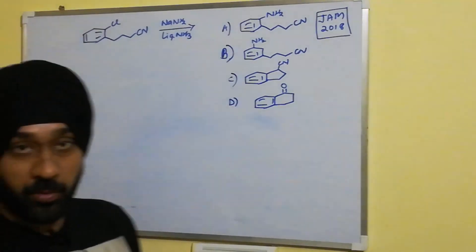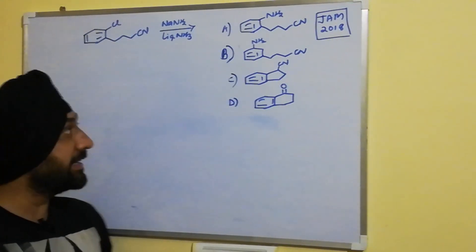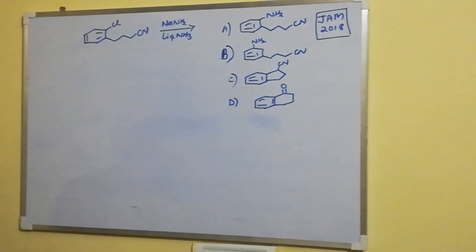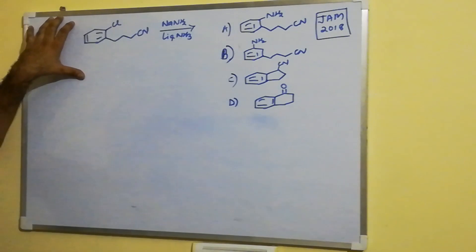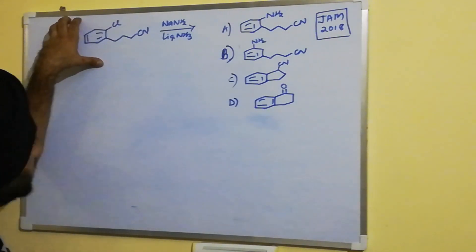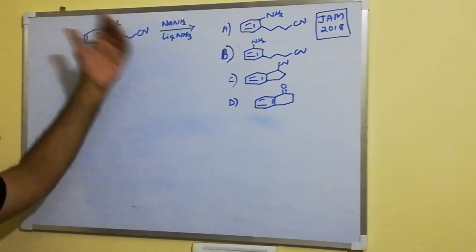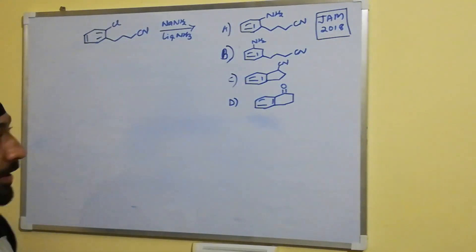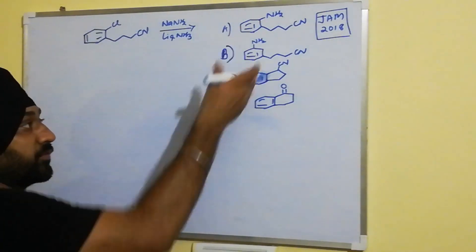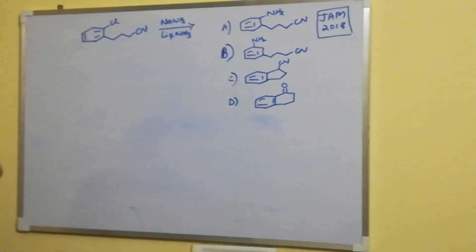Today we are going to discuss a problem which appeared in the JAM 2018 exam. The reaction involves an aromatic chloride with a cyano group on the side chain, treated with a strong base like sodamide, and we are given four options for the product.